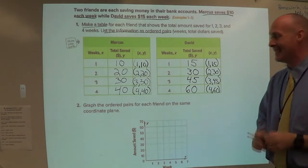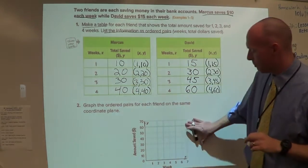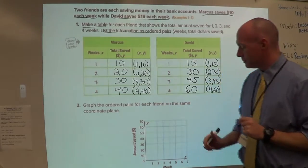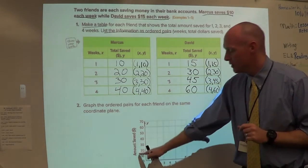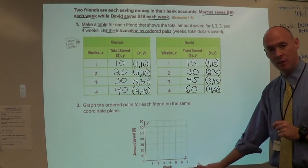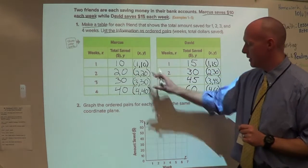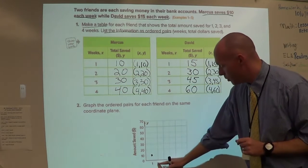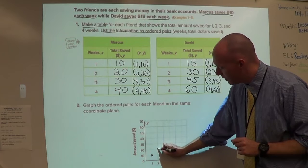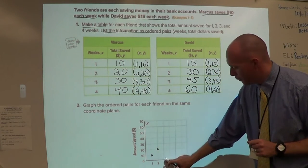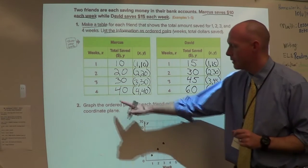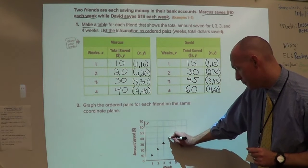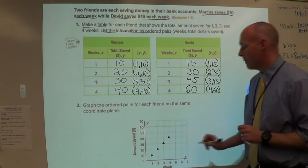Graph the ordered pairs for each friend on the same coordinate plane. So here's the coordinate plane. I apologize, I know it's kind of small, so just try to cram your numbers in there. So let's start with Marcus. Notice we have my y-axis is the amount saved in dollars, my x-axis is the weeks. So week one, he was at $10. Week two, he was at $20. So I go to week two and I go to $20. Week three, he was at $30. Week three, all the way up to $30. Week four, he was at $40. Week four, he was at $40.